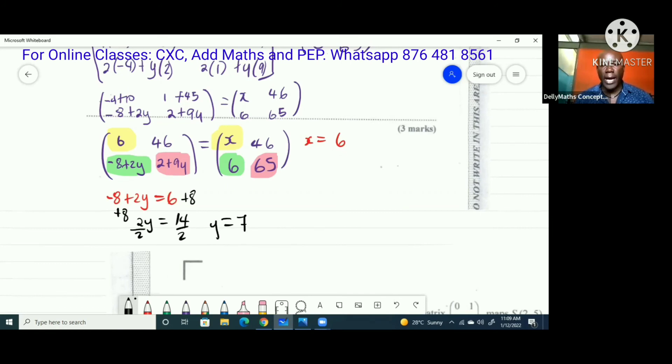If you wanted to use the other one to solve for y, you could have used 2 plus 9y equals 65. 9y - we'll subtract 2 from both sides. This equals 63. Divide by 9. Then y is equal to 7. So you can see you get the same answer. You don't need to do two in the exam.